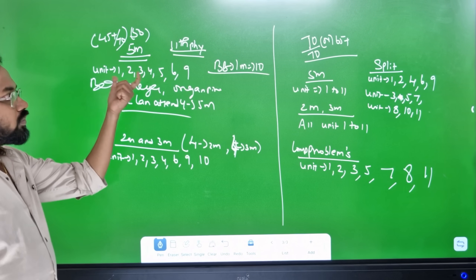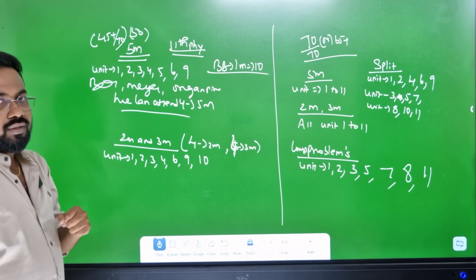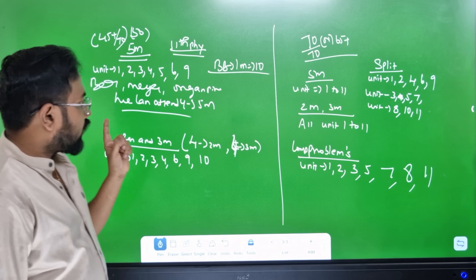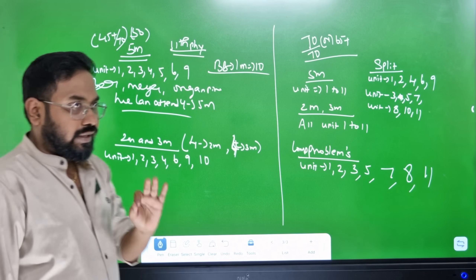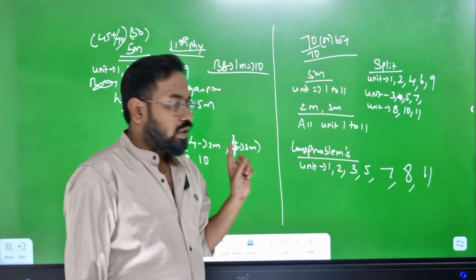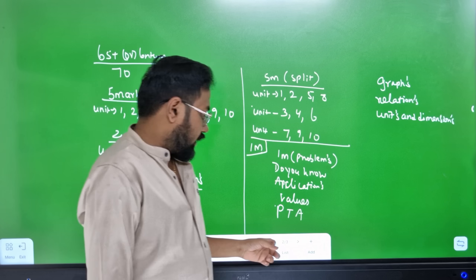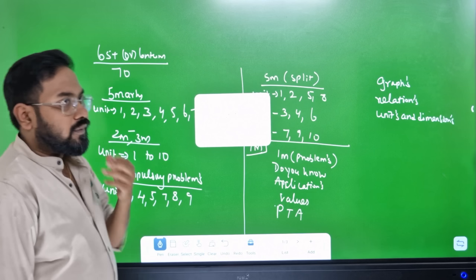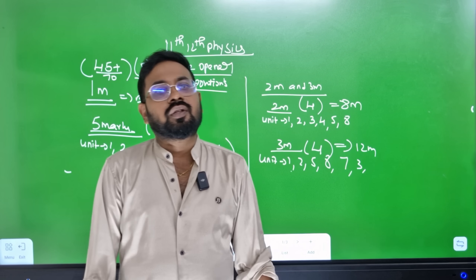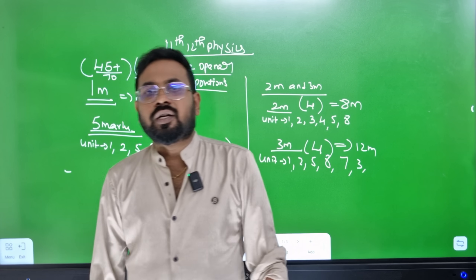If you want a little bit more marks, you can aim for 4-5 extra. This is all about physics — you need to analyze how much you have done. Use this video so that you can learn and enjoy the content. Take a look at this video, support the channel, and thank you.